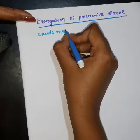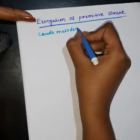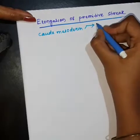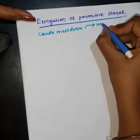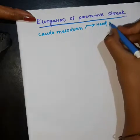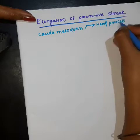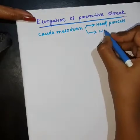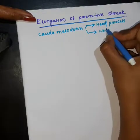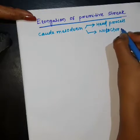The caudal mesoderm is formed at the interior side, giving rise to the head process and the notochord — it has two parts: the head process and the notochord.